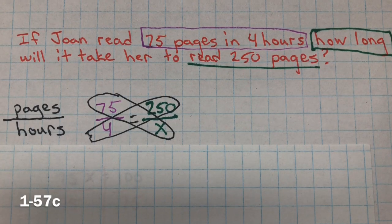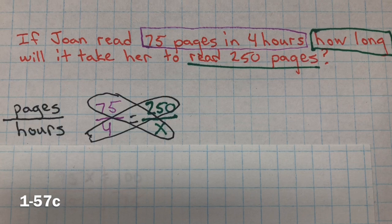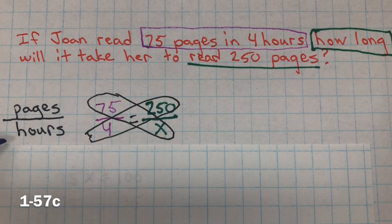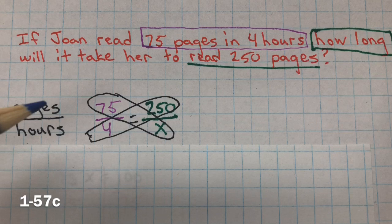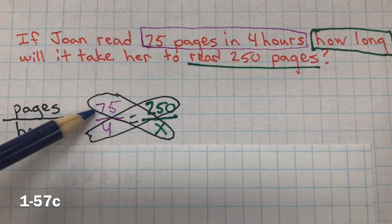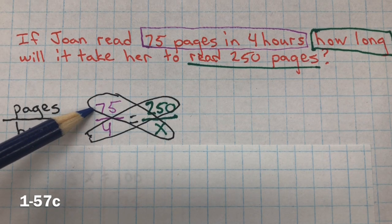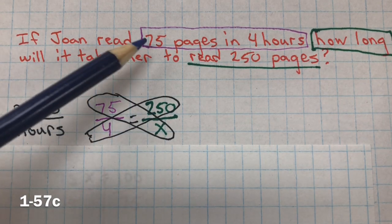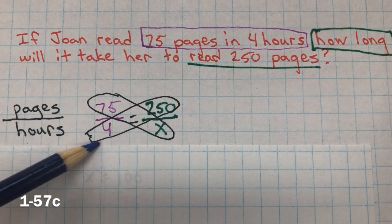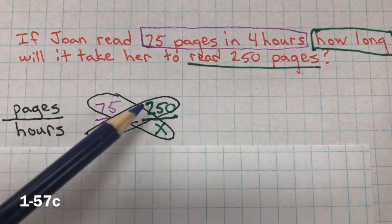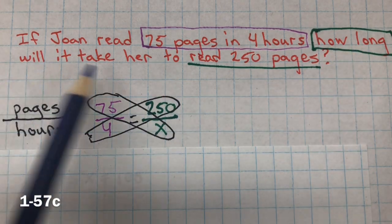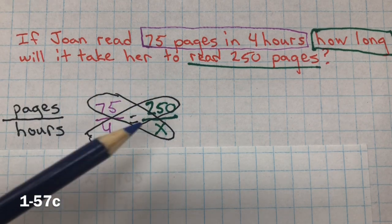In 57 C, if Joan read 75 pages in 4 hours, how long will it take her to read 250 pages? So we have pages to hours. And so when we set it up as a ratio, this ratio, the numerator has to have pages, same with this ratio. So we have 75 pages in 4, 250 pages, and we don't know how many hours. That's what we're trying to find out.